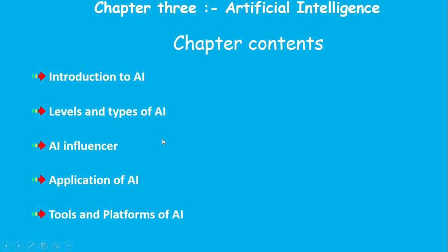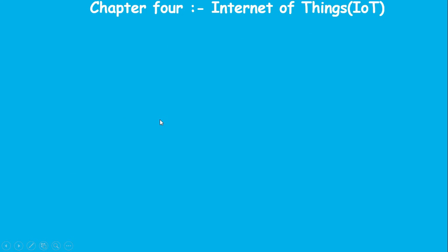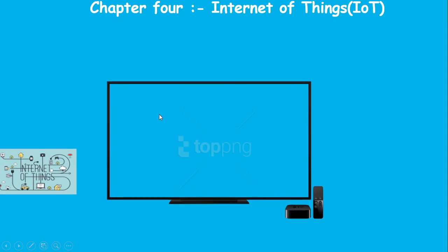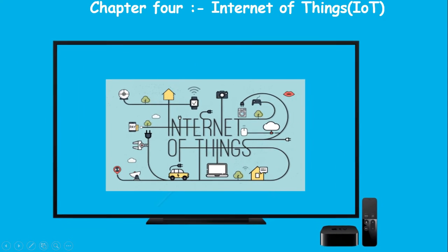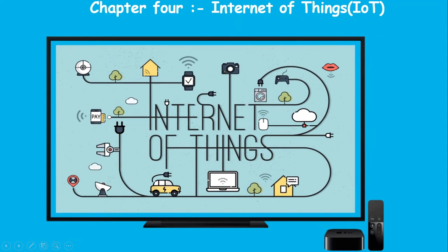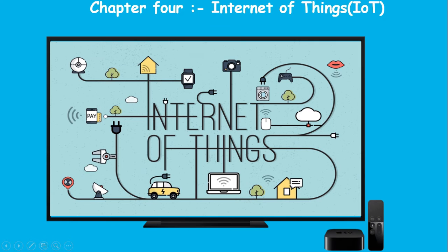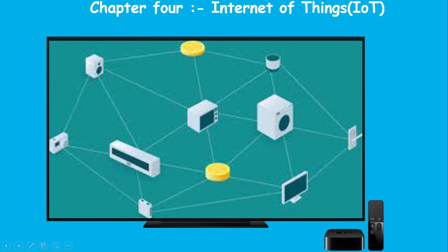In chapter four, we cover the Internet of Things. This chapter is different from the others — we are going to take a look at how the internet communicates and connects devices.